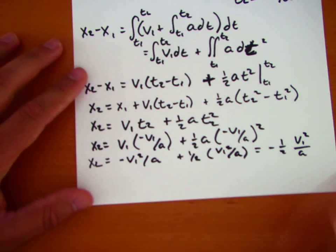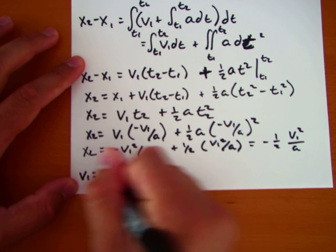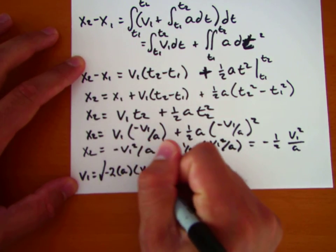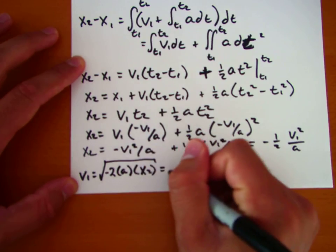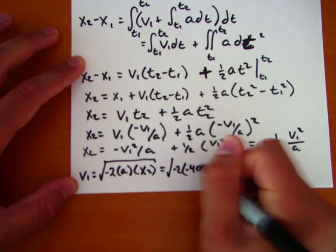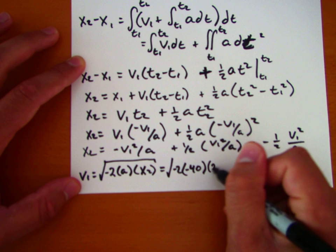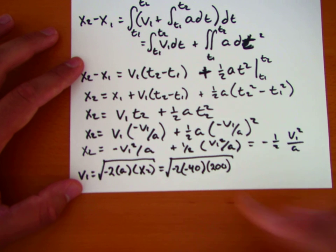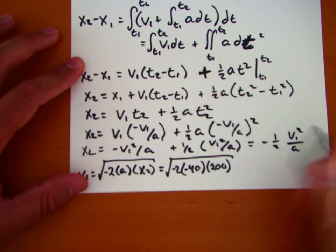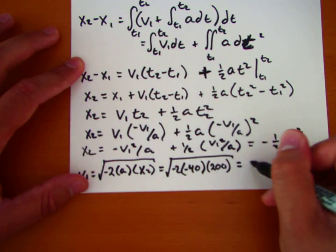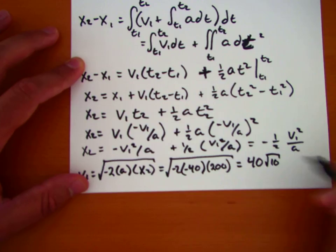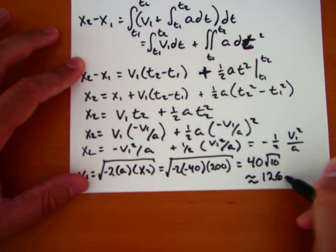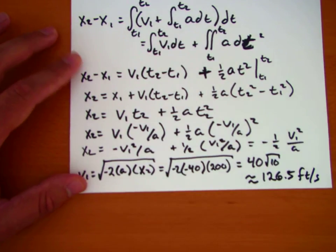And so now what we can do is solve for v1. And we get v1 is equal to the square root of negative 2 times a times x2, which is equal to the square root of negative 2 times negative 40, and then x2 is 200. And this is 80 times 200, so that gives us the square root of 16,000, which is also equal to 40 times root 10, which is about equal to 126.5 feet per second.